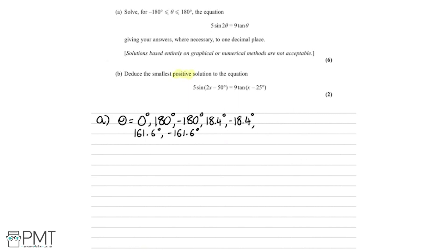Part b says: deduce the smallest positive solution to 5sin(2x − 50°) = 9tan(x − 25°), for two marks. This equation is very similar to part a — the difference is that θ has been replaced with x − 25°. So we can set θ = x − 25°, which is consistent since 2θ = 2x − 50°. Rearranging gives x = θ + 25°.